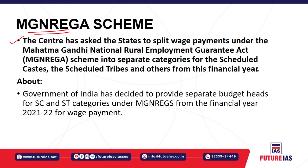Recently, there have been various governing structures or mechanisms for MGNREGA in the states. The Centre has asked the states to split the payments provided to workers under MGNREGA. These payments will now be given separately to Scheduled Castes, Scheduled Tribes, as well as Others — so there will be a categorization of wage payments provided to workers under MGNREGA.